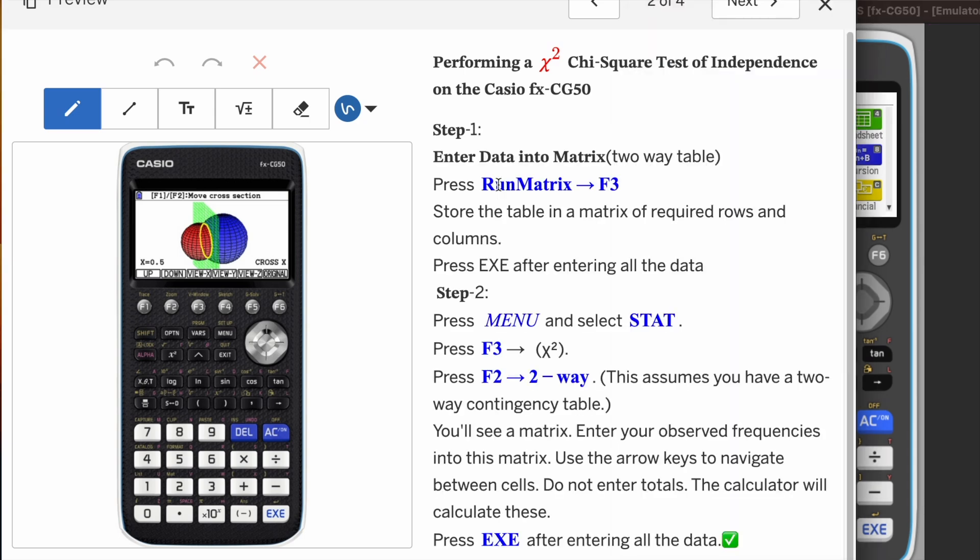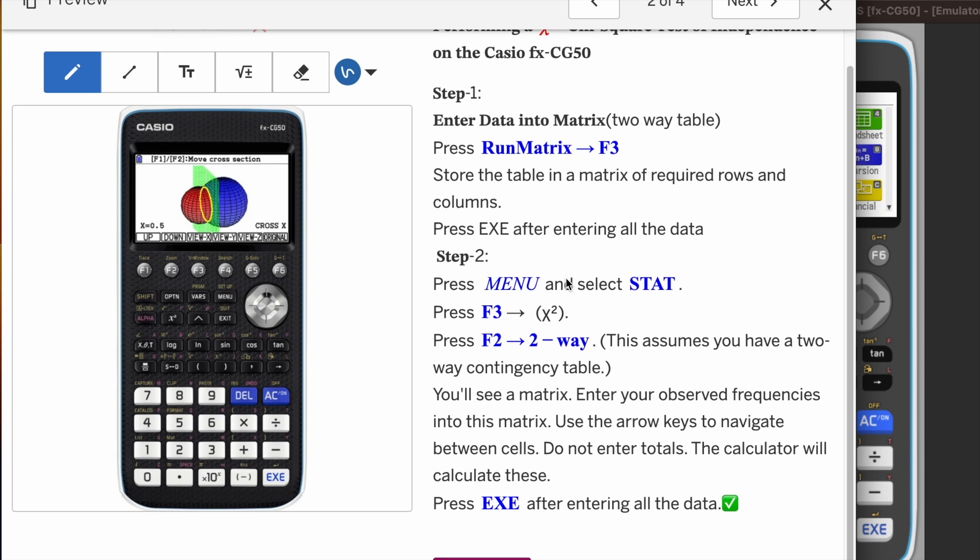I'm going to show you instructions for Casio CG50. First, you have to use run matrix because we need to store the data into a table, which is a matrix in our Casio. Once stored, we will go to menu and statistics.